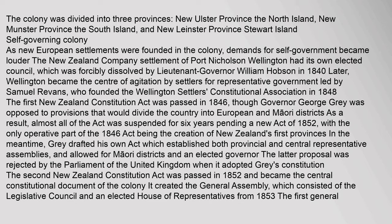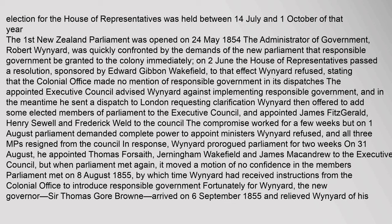The 1852 Act created the General Assembly, which consisted of the Legislative Council and an elected House of Representatives from 1853. The first General Election for the House of Representatives was held between 14 July and 1 October of that year. The first New Zealand Parliament was opened on 24 May 1854. The Administrator of Government, Robert Wynyard, was quickly confronted by demands from the new Parliament that responsible government be granted to the colony immediately.